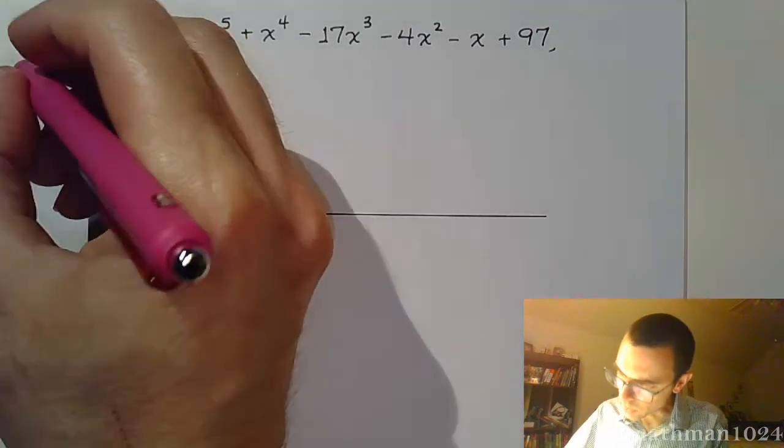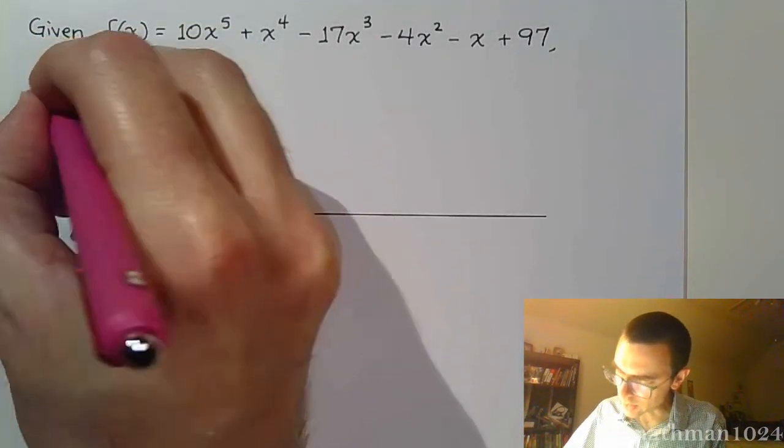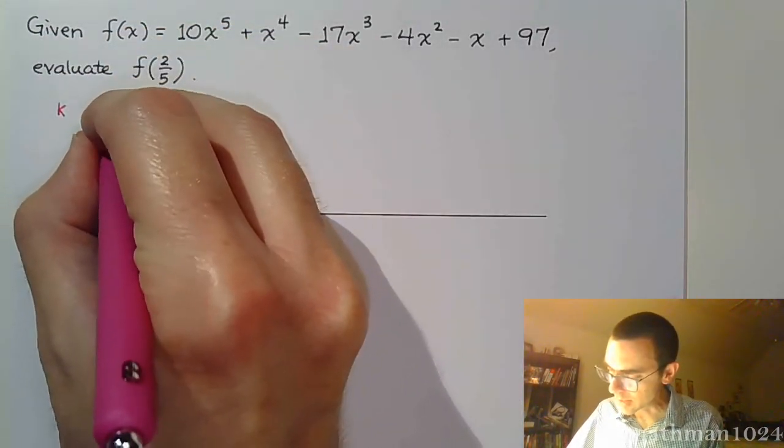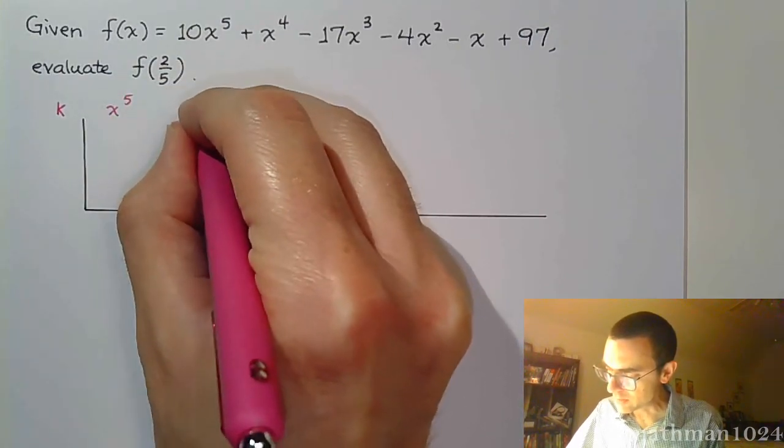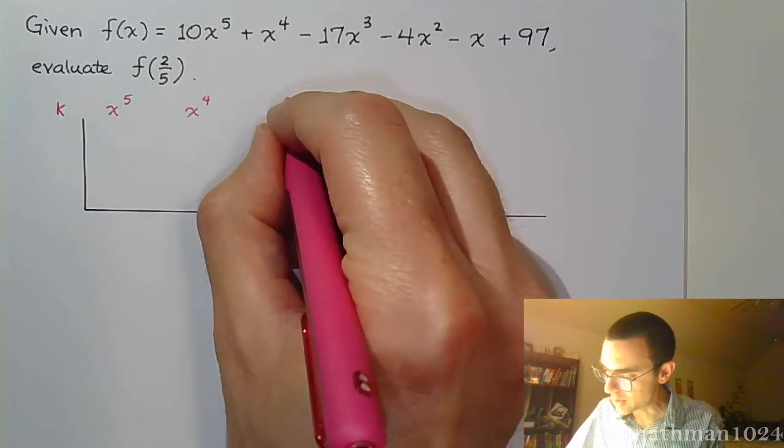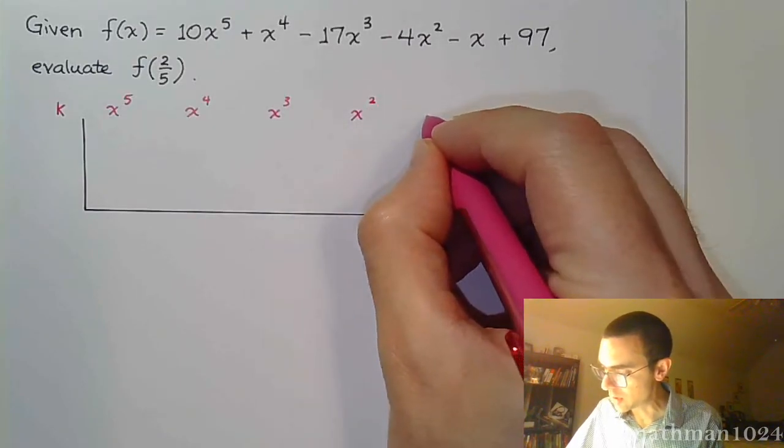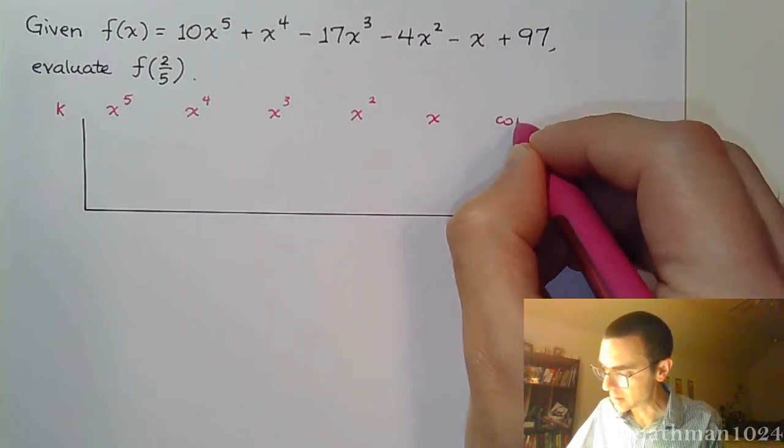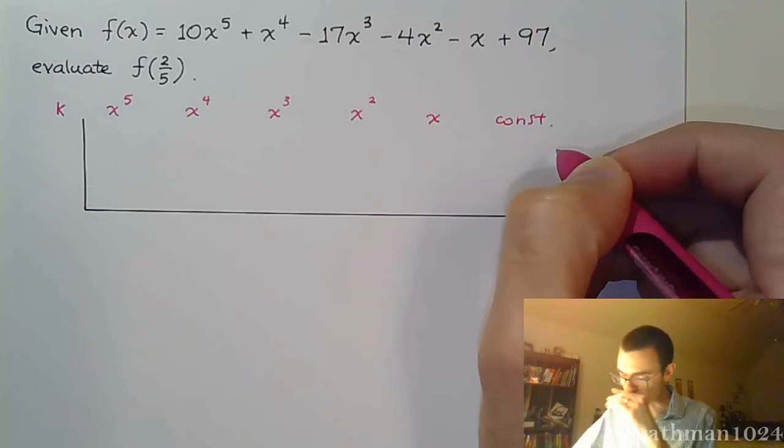and we're going to put our column headings here, so that's k. Again, this goes up to x to the 5th power, so we're going to cut it down, 5, 4, 3, 2, 1, and then your constant at the end.